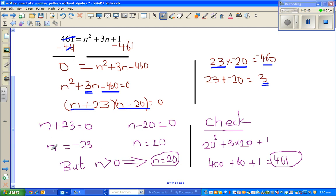Now this is a very important step to get excellence. You have to justify. You have to only accept the appropriate answer. Negative 23 cannot be appropriate in this situation because N is the pattern number. Pattern number can't be negative. So N is 20.